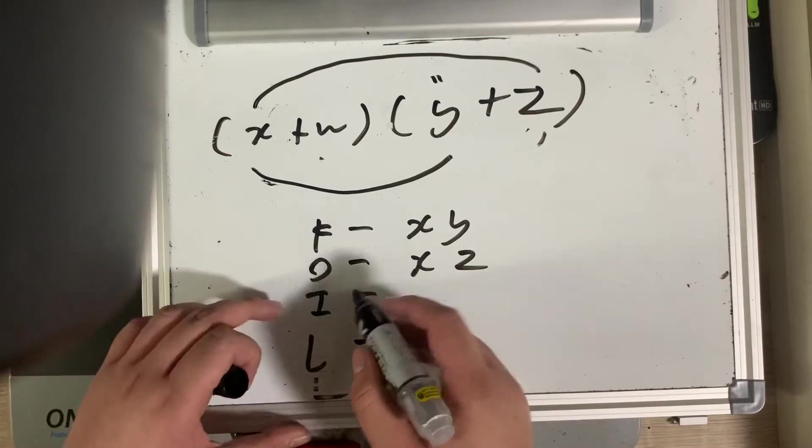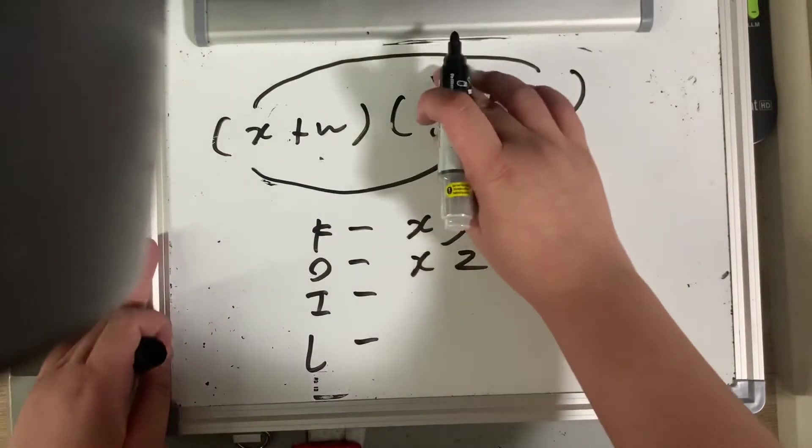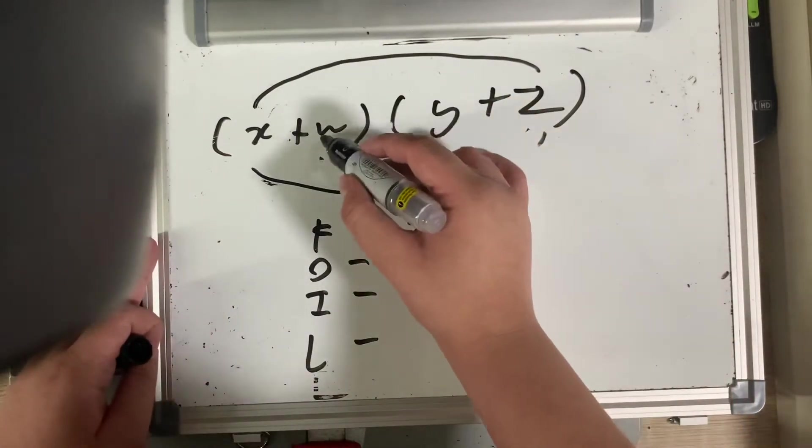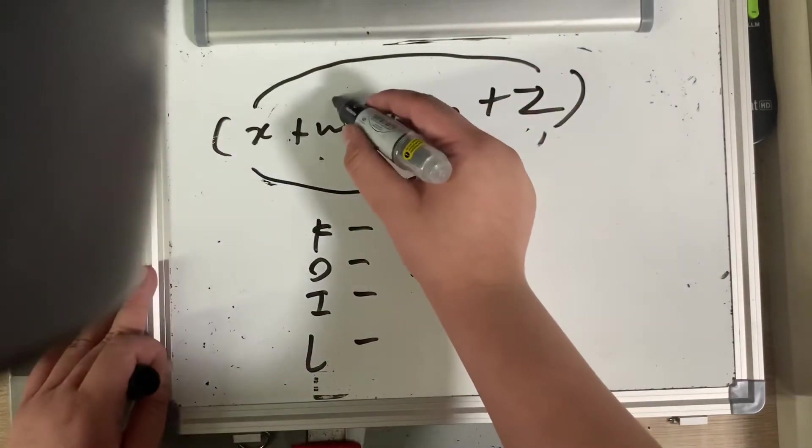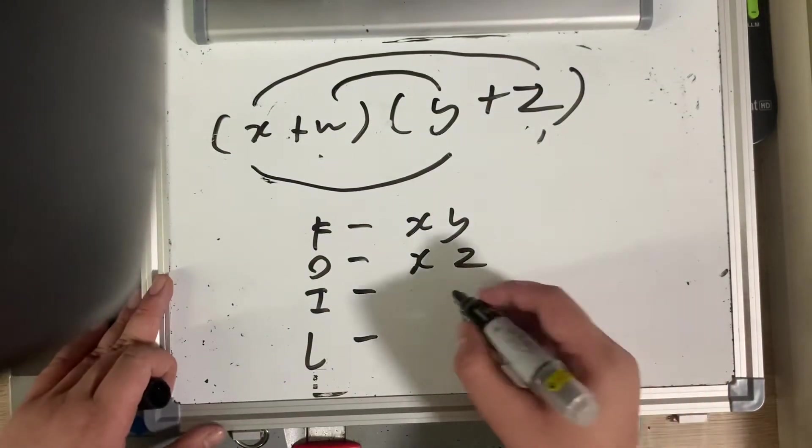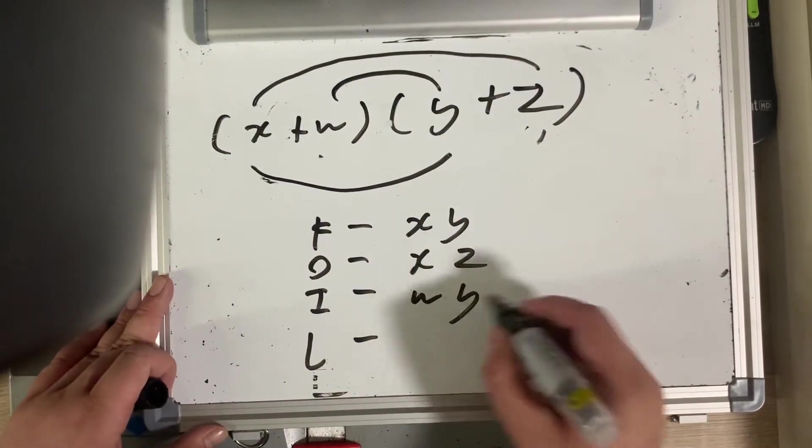Then, I will have to be multiplying the inner guys now to make the next combination. Inner guys, w, y, they're both on the inside. Inner guys. That's w times y.